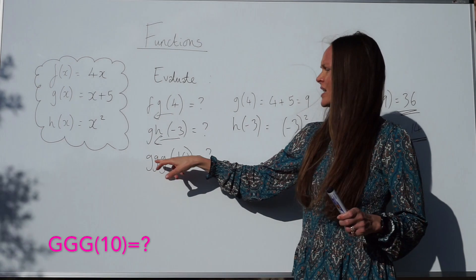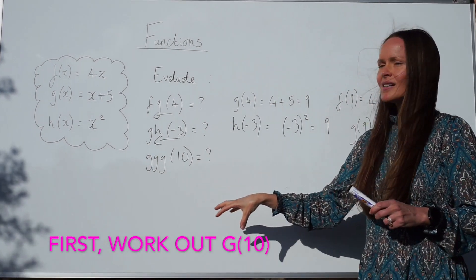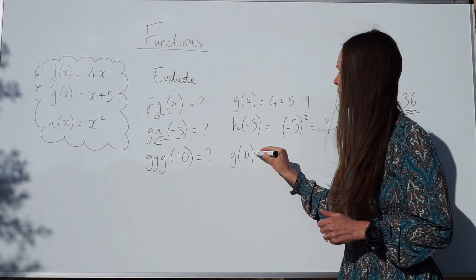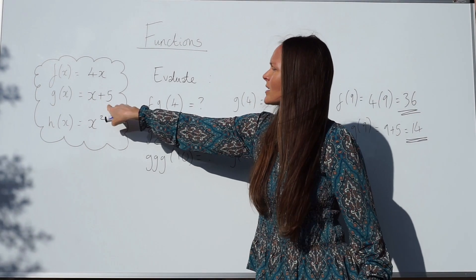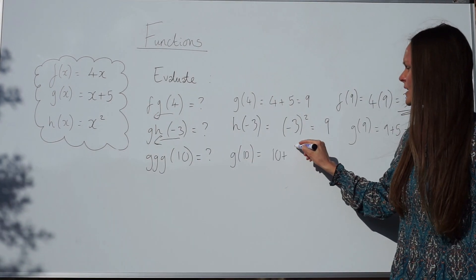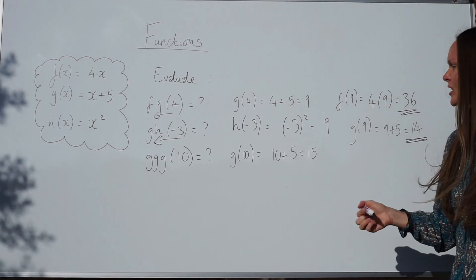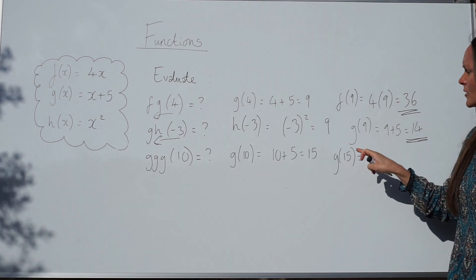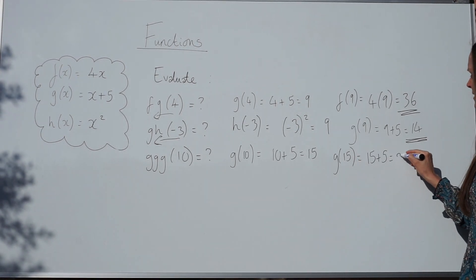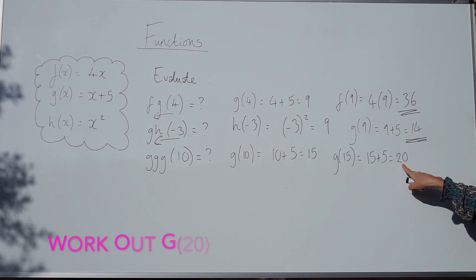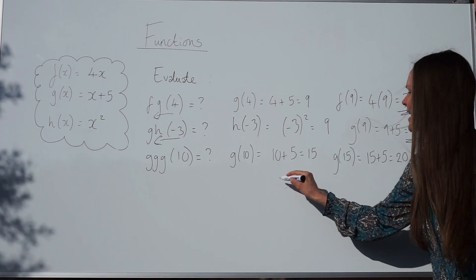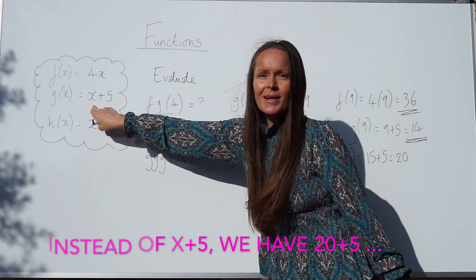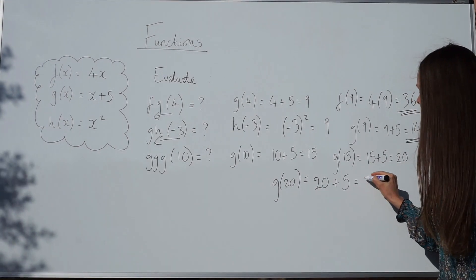This time we have to work out g g g of 10 — three applications of g. First, work out g of 10: instead of x plus 5, we've got 10 plus 5, which is 15. Next, work out g of 15: 15 plus 5 is 20. Then work out g of 20: 20 plus 5 gives 25. So the final answer is 25.